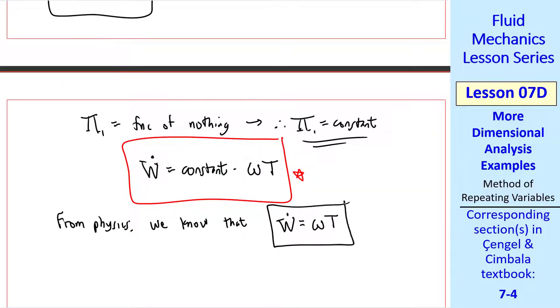Our final result is thus w dot is a constant times omega t. From physics, we know that w dot is omega t. In other words, the constant is 1 in this case. So again, we were able to come up with an equation within an unknown constant, just from dimensional analysis without knowing any physics at all.